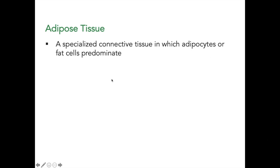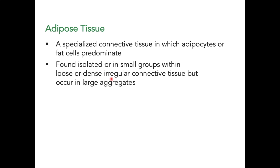Adipose tissue, as we mentioned last time, is a specialized connective tissue in which adipocytes or fat cells predominate. They are found isolated or in small groups within loose or dense irregular connective tissue, but occur in large aggregates, closely associated with other connective tissues which contain blood vessels and fibrous tissue.